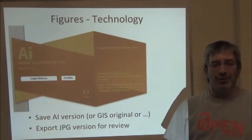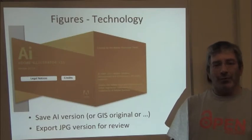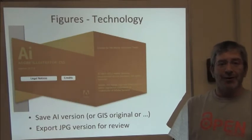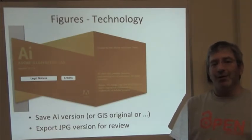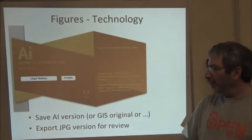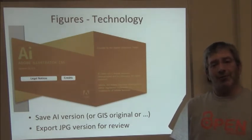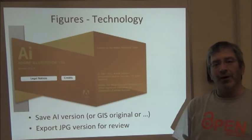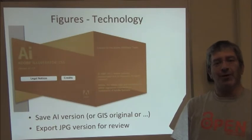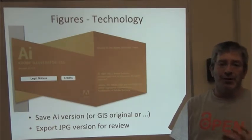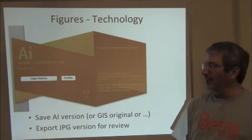So one thing that I like to do is to save the original version that's in the platform. So it might be Adobe Illustrator, it might be ArcGIS. But save that original, so that if a reviewer asks you to change some part of the figure, you can very easily pull up exactly where you were when you finished the figure, and change that one detail instead of having to redo the whole figure.